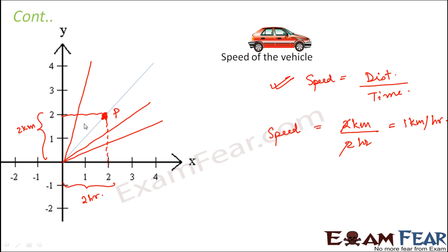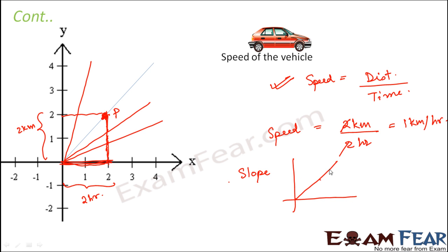Slope is the slant of the line, given by the vertical distance divided by the horizontal distance. For a straight line with points O, B, and A, slope equals AB divided by OB. That is how we define slope — the vertical rise over the horizontal run along the line.